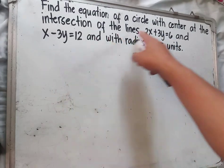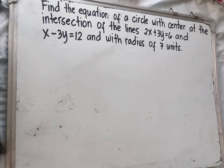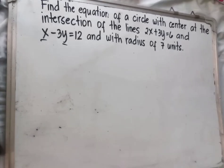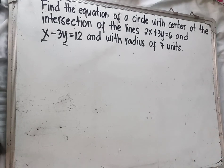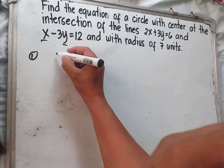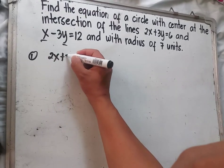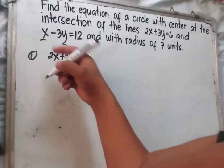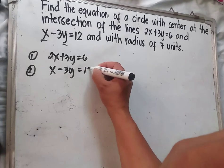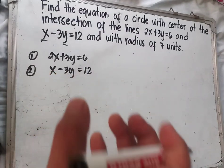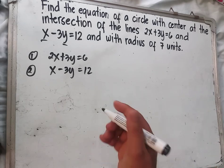Based on the given problem, the center is at the intersection of the two given equations. To find it, we will use systems of linear equations — we can use elimination or substitution method to find the value of x and y. We will use elimination method. Equation 1 is 2x plus 3y equals 6, and Equation 2 is x minus 3y equals 12.